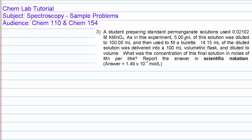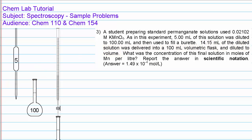The problem tells us that we start with a standard solution of 0.02102 mol per litre potassium permanganate, and 5 millilitres of that solution are diluted to a total volume of 100 millilitres. Then there's a further dilution made to produce a third solution, and we're asked what the concentration of this third solution is. So it helps to look first at the apparatus we use to do this.